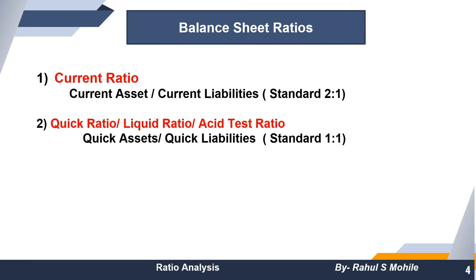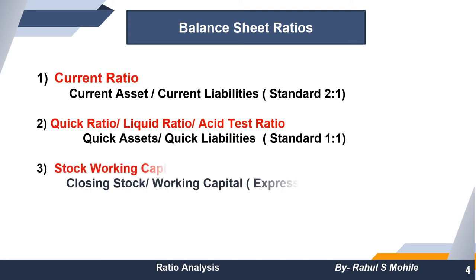The quick ratio reveals how strong the liquidity is of our company — for example, how much cash and liquid assets we have. Basically, to measure liquidity we use the quick ratio, and the standard is fixed as 1:1. The formula is quick assets divided by quick liabilities. The third balance sheet ratio is stock working capital ratio, which identifies the relationship between the stock and the working capital.